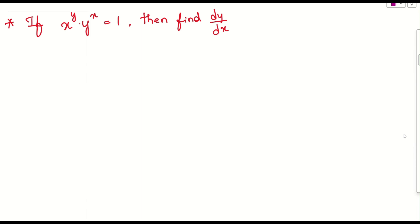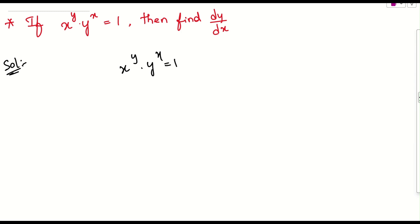Let us look into the question given here: if x power y times y power x equals 1, then we need to find dy by dx. So let us see how to do this problem. This is x power y times y power x equals 1.